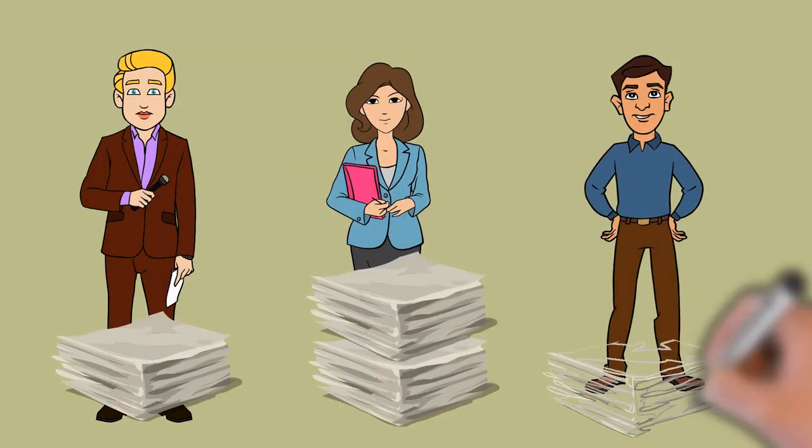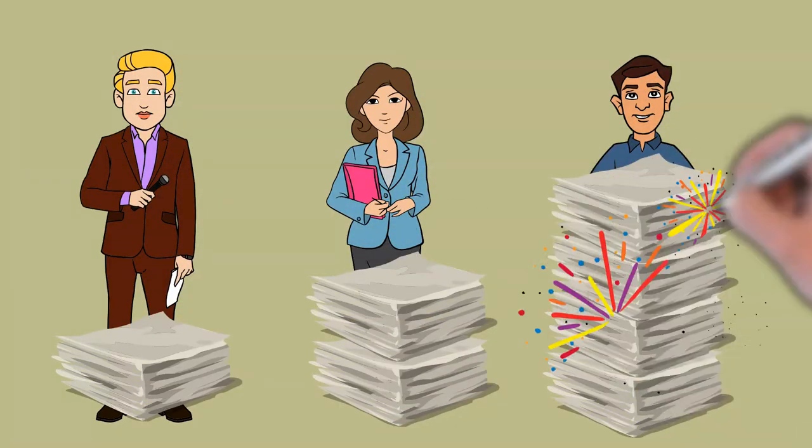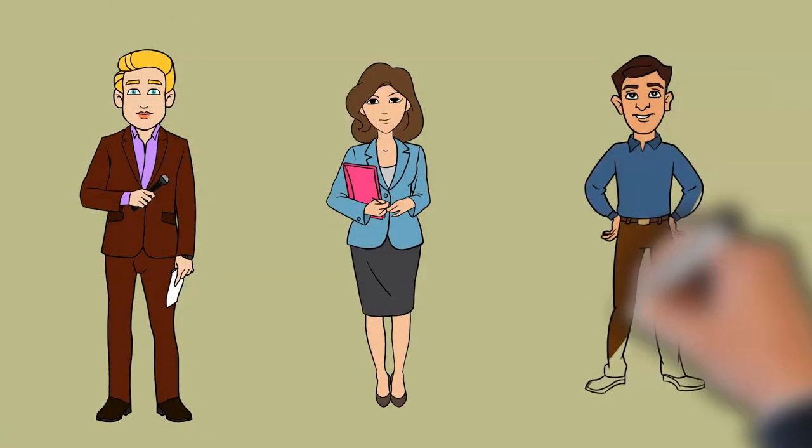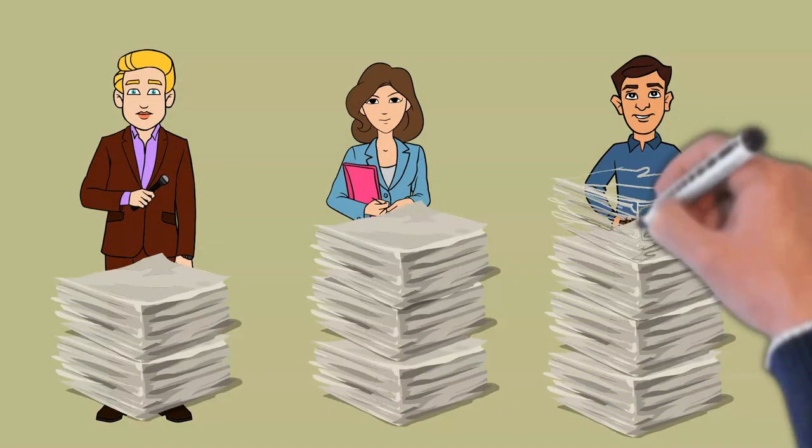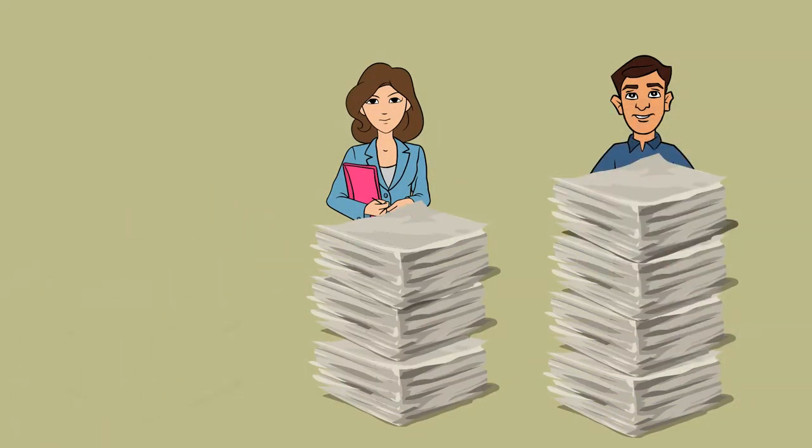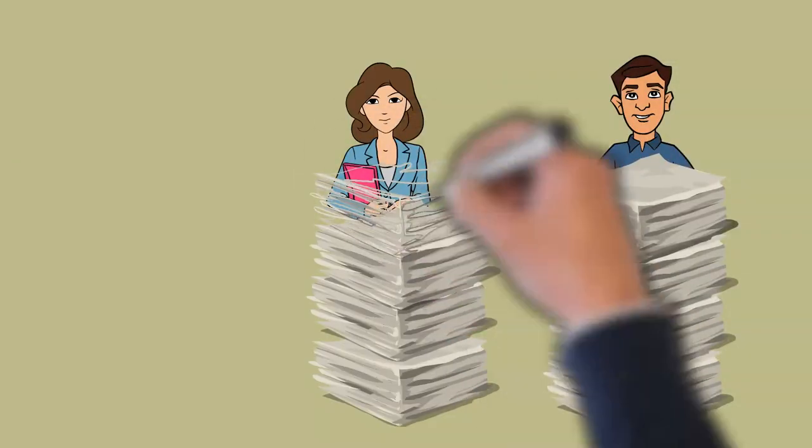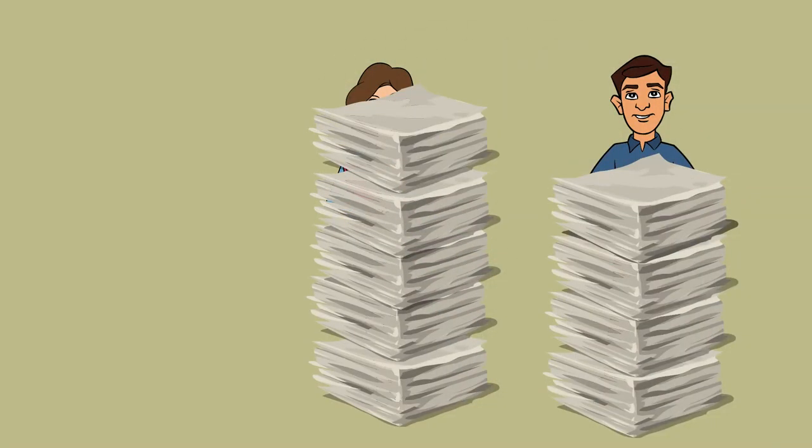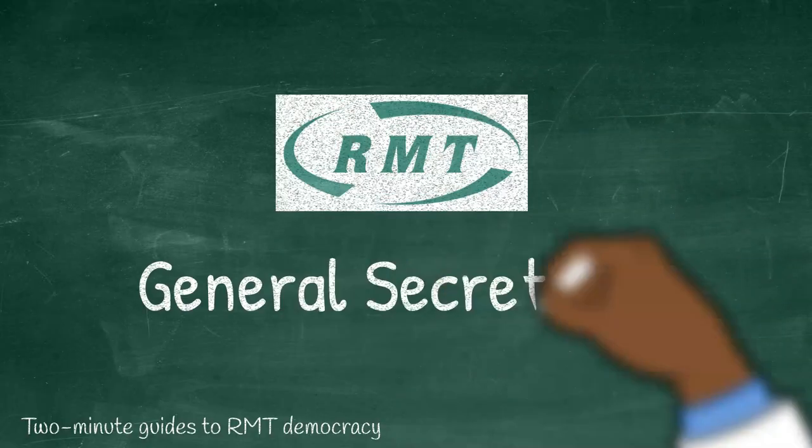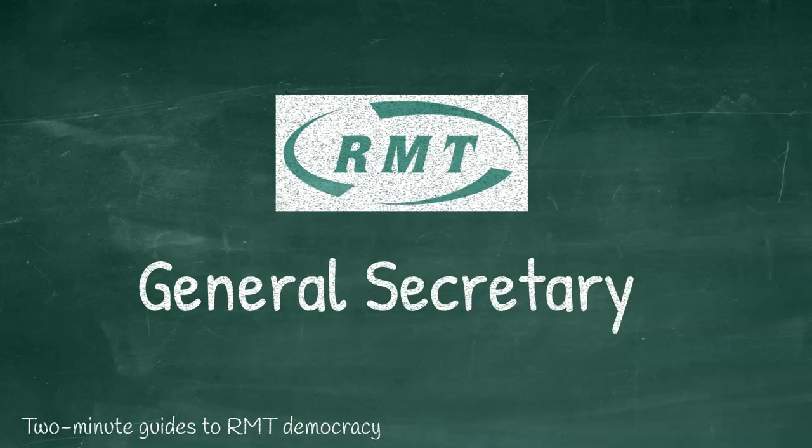When the ballot papers are counted, if one candidate receives more than half of the first preference votes, they are elected. If not, then the lowest scoring candidate is eliminated and their votes are transferred to the voters' second choice candidates. This process continues until one candidate has more than half the votes and is elected, and becomes the RMT General Secretary.